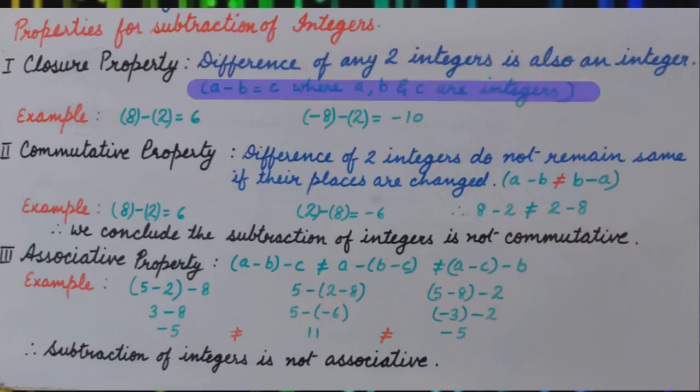A minus B equal to C where A, B and C are integers. Let's see how. For example, 8 minus 2 is 6 where 8, 2 and 6 are integers. Minus 8 minus 2 equal to minus 10 where minus 8, 2 and minus 10 all are integers. It means subtraction is closed for integers.